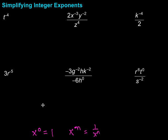Let's apply that as we look at these six examples. The first one is t to the negative fourth power. To get rid of that negative fourth power — and it's key that these aren't simplified if there's a negative power — we have to take care of those. So that negative fourth power: to get rid of it, I'm just going to flip it to the bottom. It's going to be 1 over t to the fourth power — that's a positive fourth power.